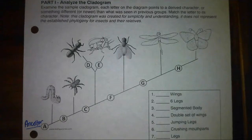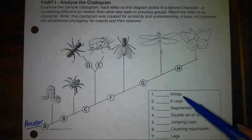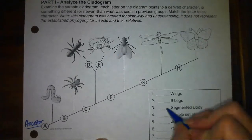I'll get you started, and then hopefully you can finish the rest. For example, if I'm looking at all these organisms and the trait that all of them have in common, if I look at my options here, I'm hoping that you can pick out that they all have some form of a segmented body.